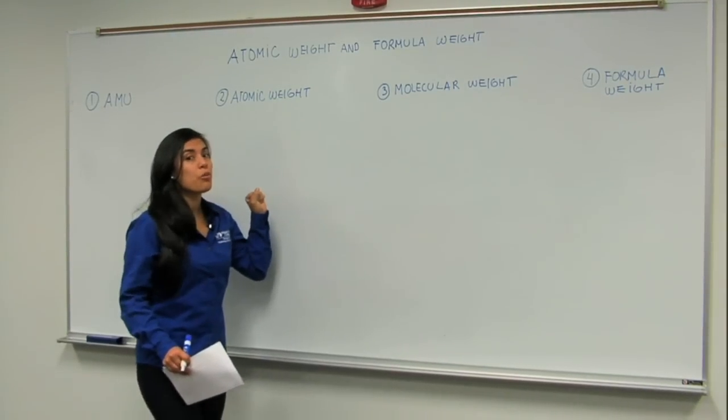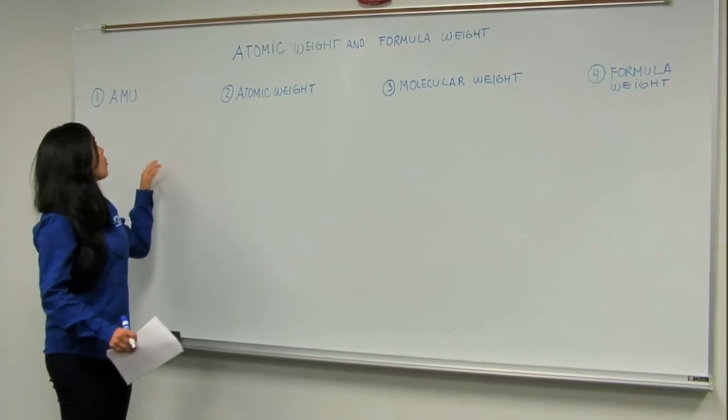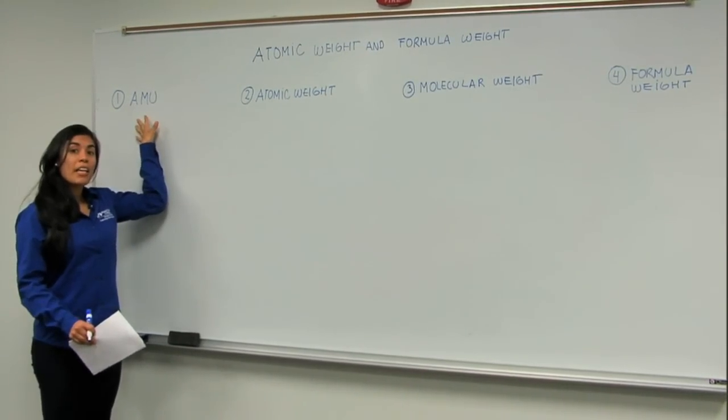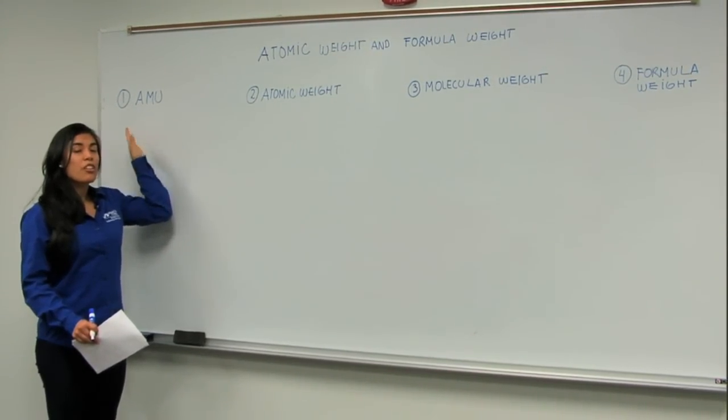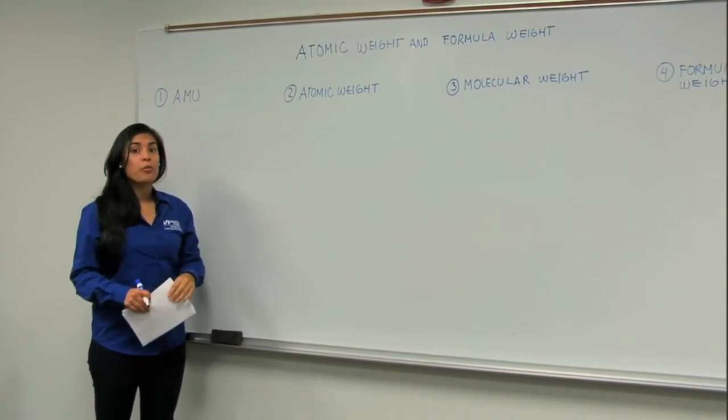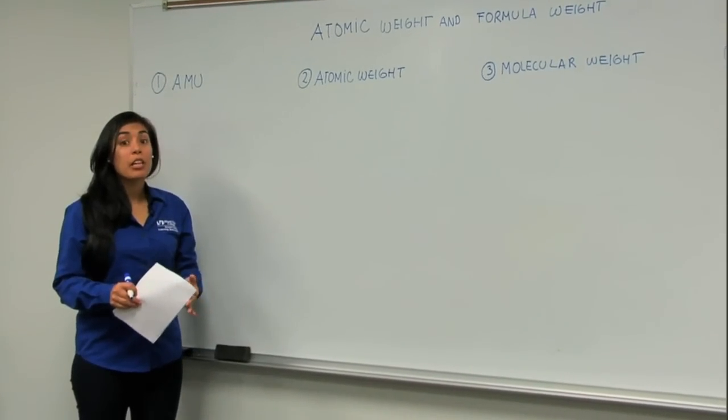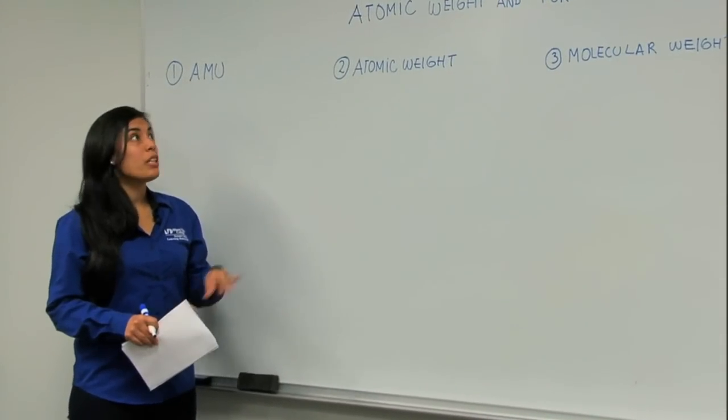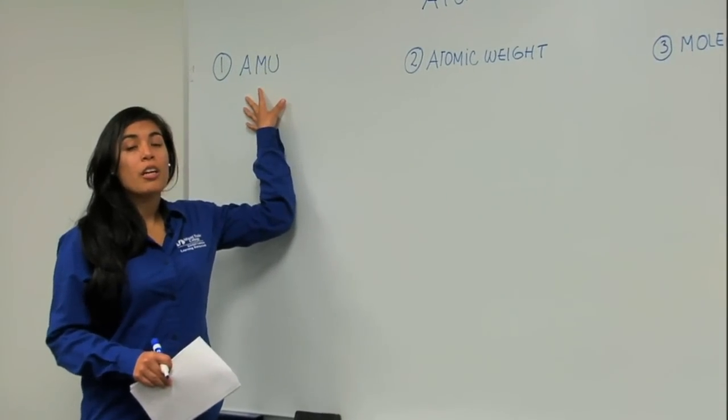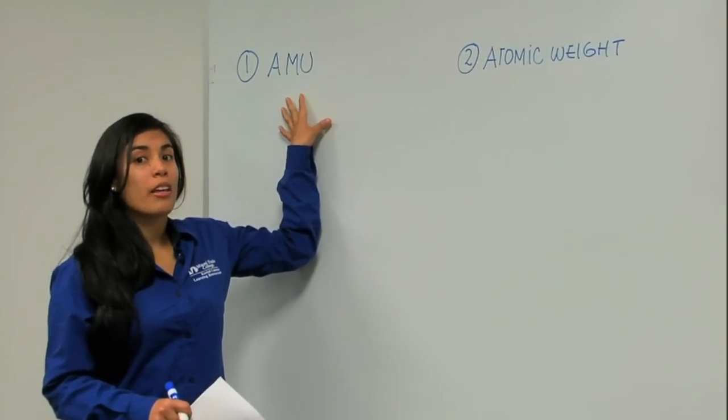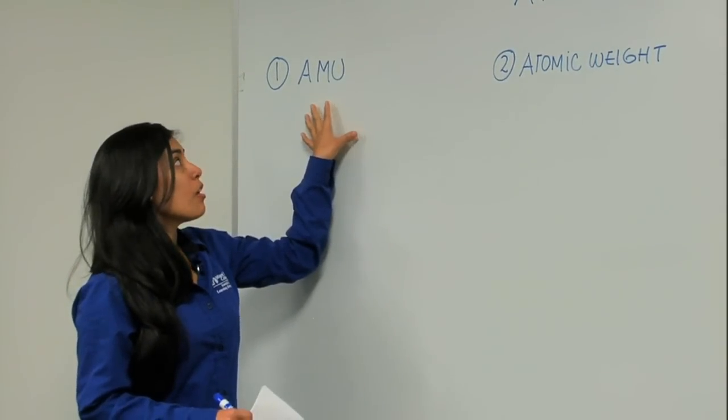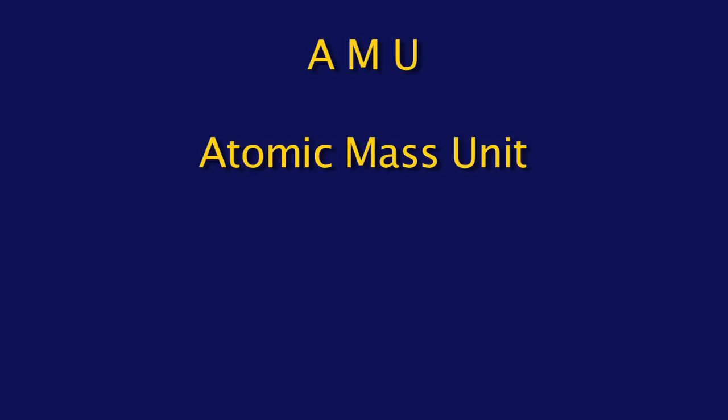However, before we go into that, we need to know what AMU is. Just as in our daily lives we use pounds, grams, kilograms to record mass, we need to know that in chemistry the unit that we use is AMU. So AMU stands for Atomic Mass Unit.